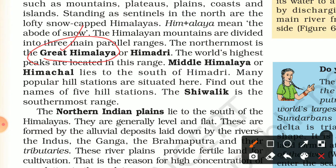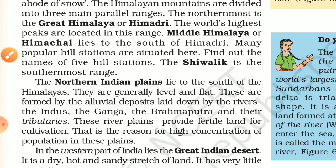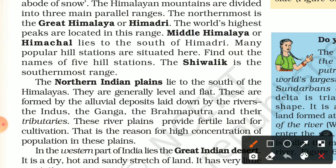The northernmost range is called the Great Himalaya or Himadri. The world's highest peaks are located in this range. South of Himadri lies the Middle Himalaya or Himanchal. Many popular hills are situated here. The southernmost range is the Shiwalik, which is the southernmost range of the Himalayas.